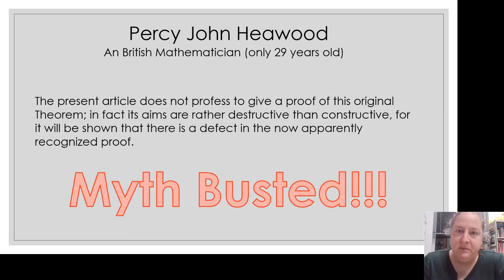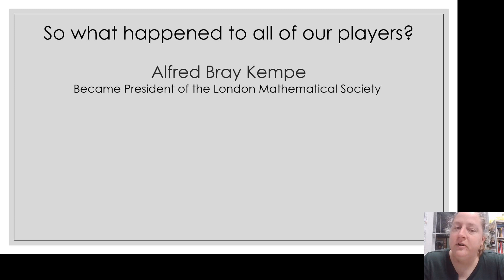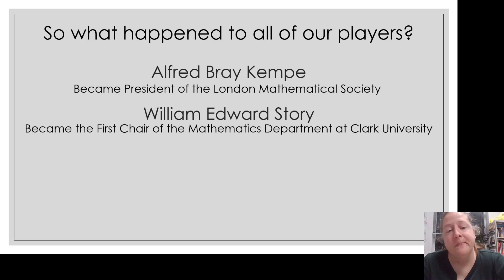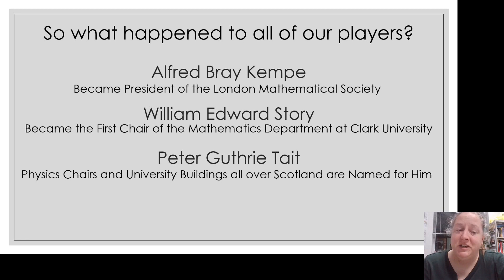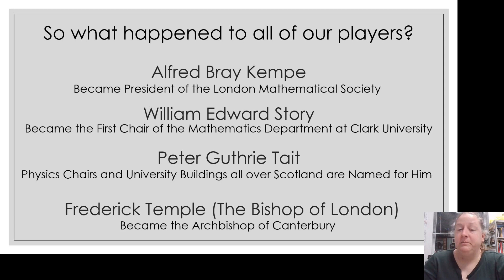What did happen to all of these players? Alfred Bray Kempe became the president of the London Mathematical Society — clearly the other mathematicians were not too upset about his incorrect proof. William Edward Story became the first chair of the mathematics department at Clark University, which at the time was the premier mathematics department in the United States. Peter Guthrie Tait has physics chairs in university buildings all over Scotland named for him. And Frederick Temple, the Bishop of London who published his proof, became the Archbishop of Canterbury — not a bad outcome for him either.